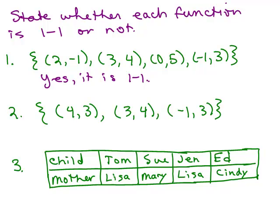For number two, I already know it's a function, so I'm going to look at the y values. I've got 3, 4, and 3 — there's a repeat. Two different x values have 3 as their output, so no, this is not one-to-one.